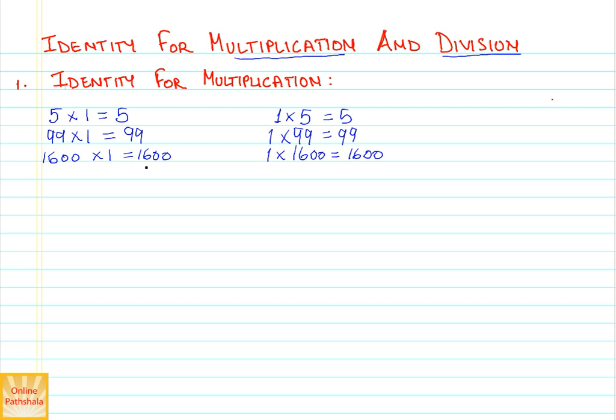This implies that no matter whichever way I multiply 1 with a whole number, it gives me the same whole number as the result.